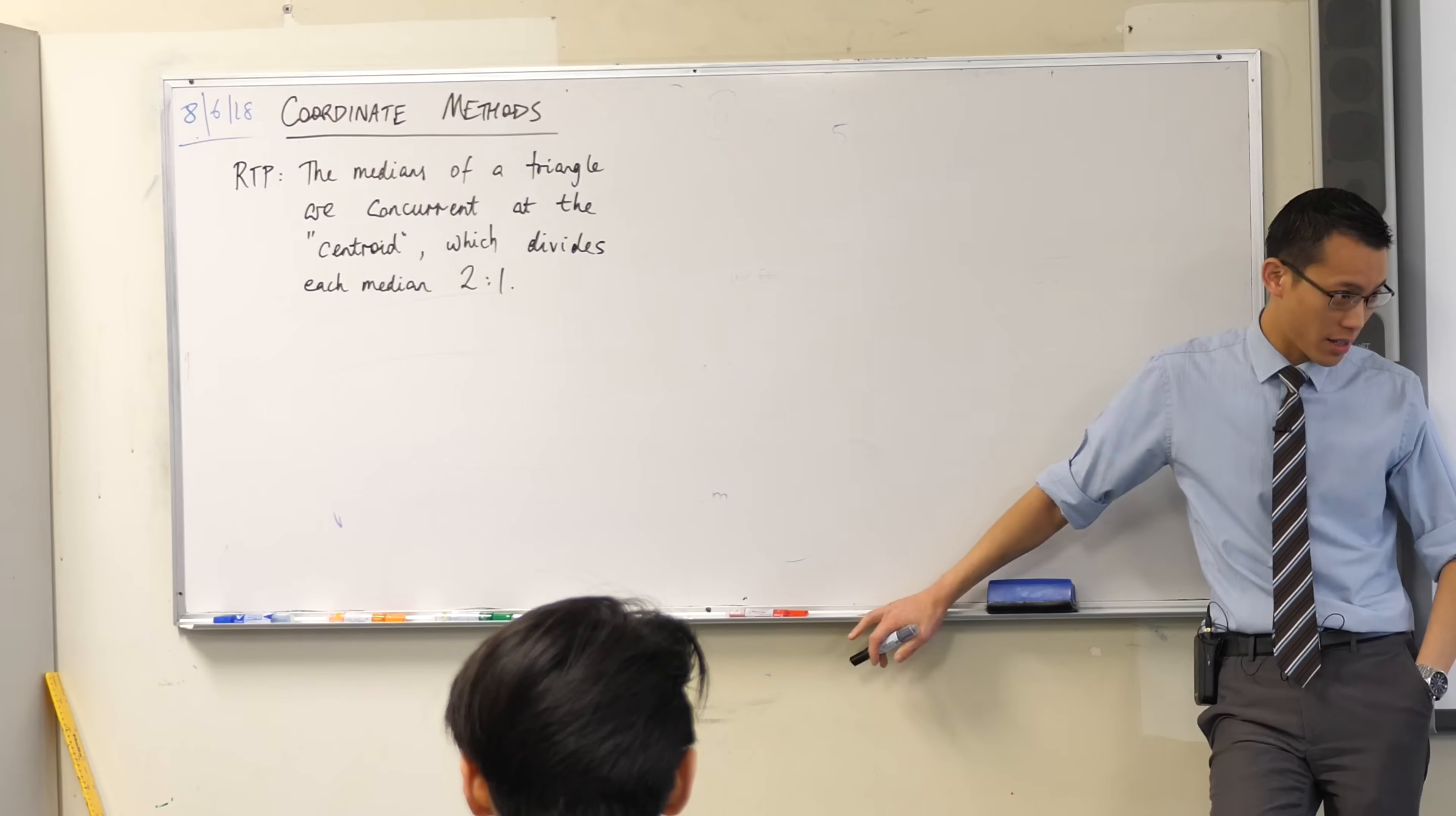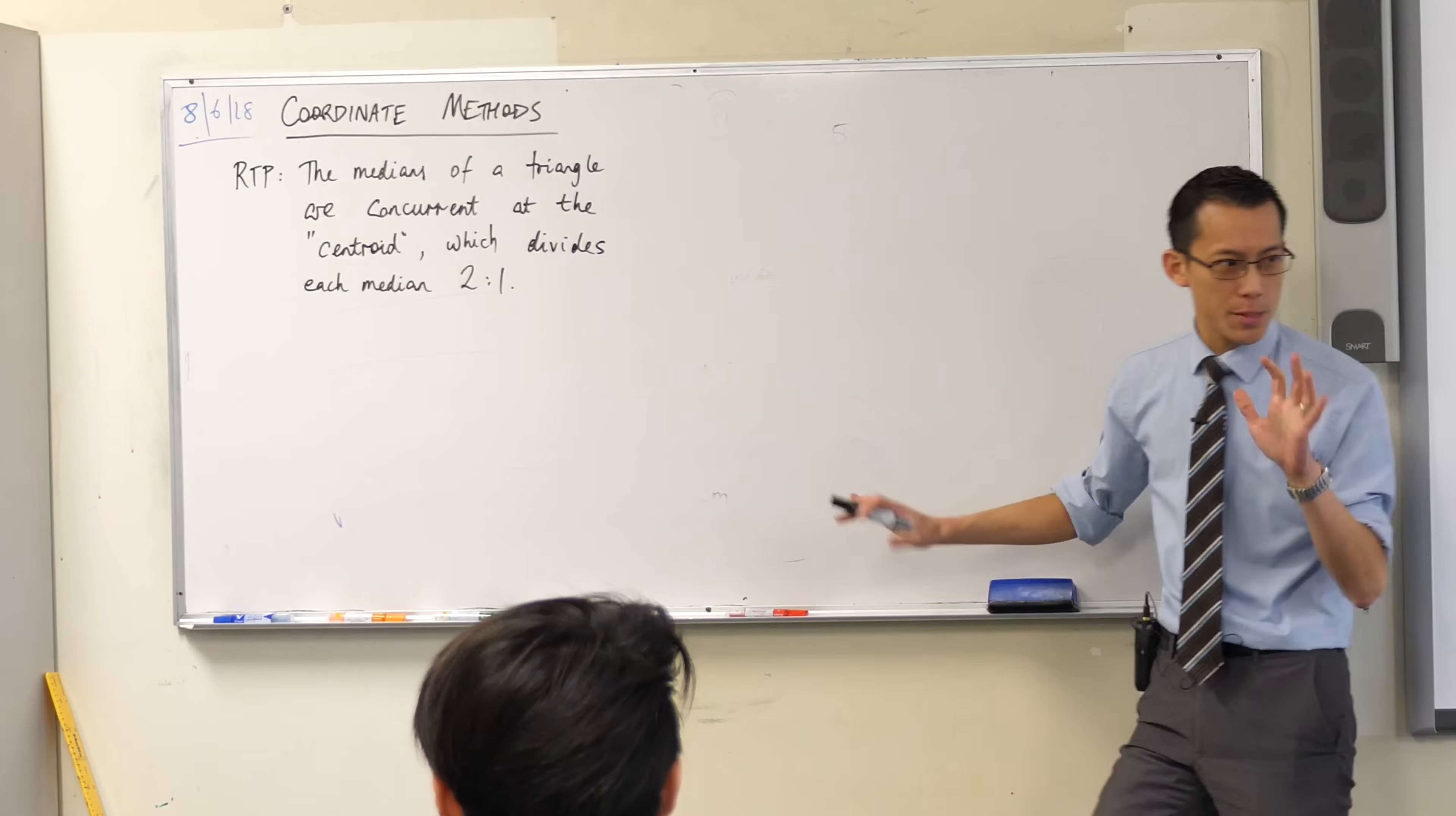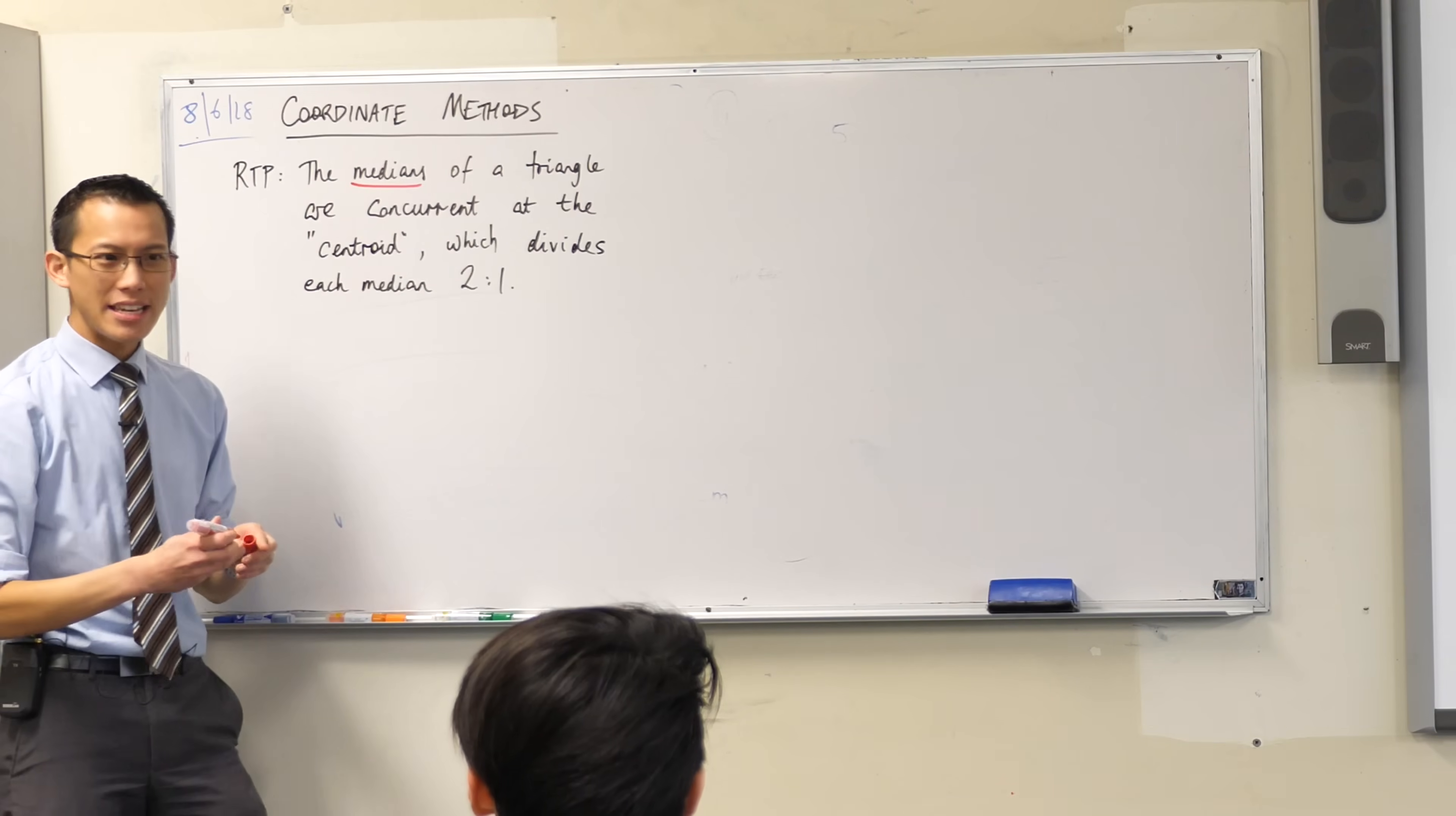So here's a typical example of a geometry proof that you could absolutely do right now without any knowledge of coordinate geometry. Let's just spell this out for you. I'll draw a diagram to help you unpack what's going on. The first thing is, it says something about medians. What is a median?